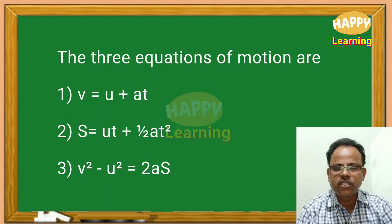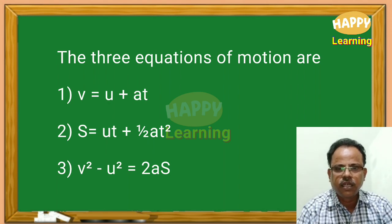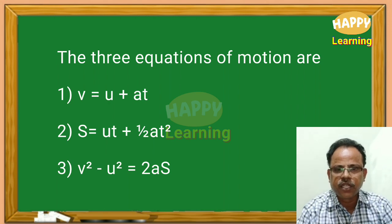The three equations of motion are: v equals u plus at; s equals ut plus half at squared; and v squared minus u squared equals 2as.